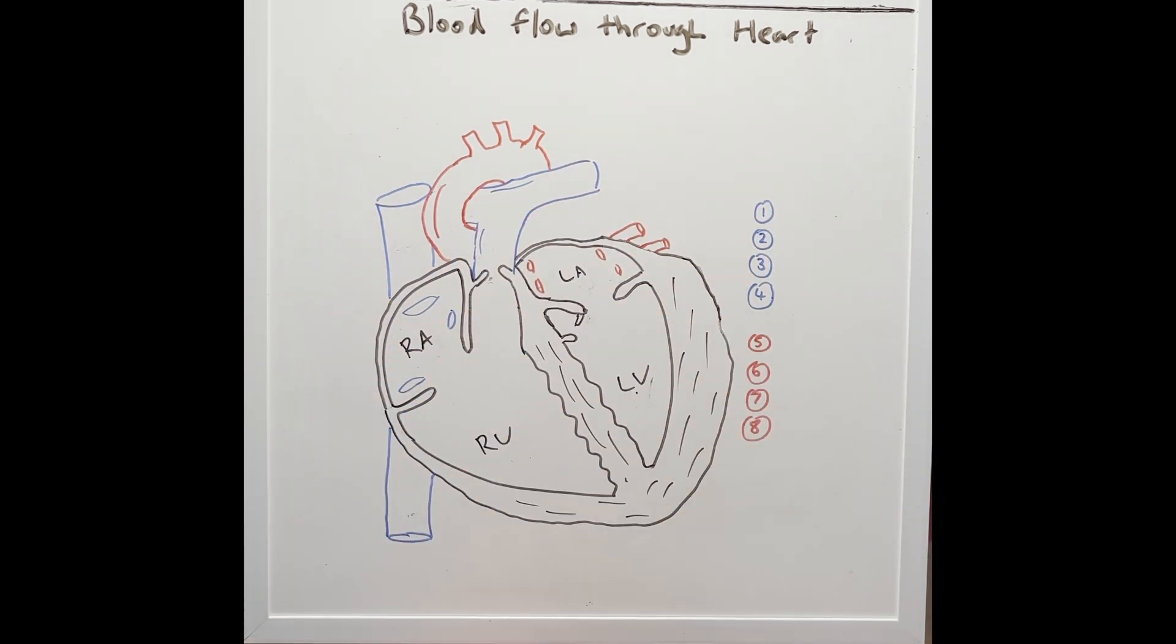Now we're going to put these two circuits together and give us the eight steps of blood flow through the heart. Before we start, the blue color denotes deoxygenated blood and the red color denotes oxygenated blood.